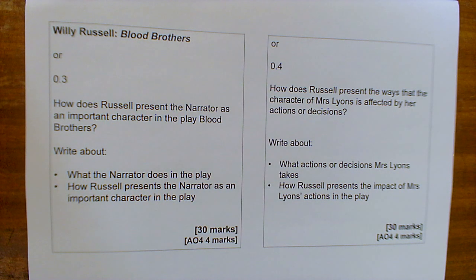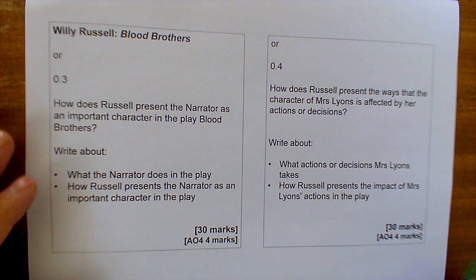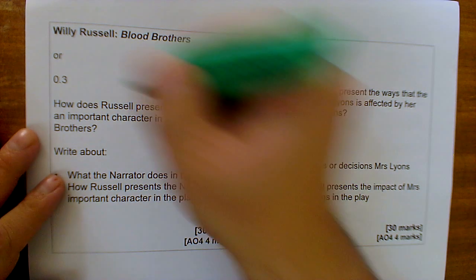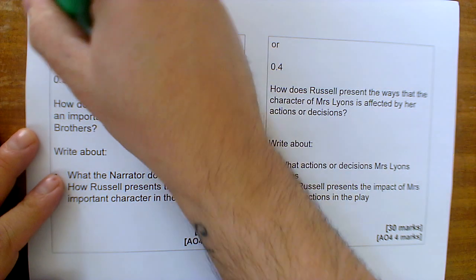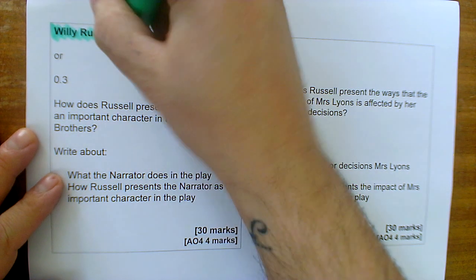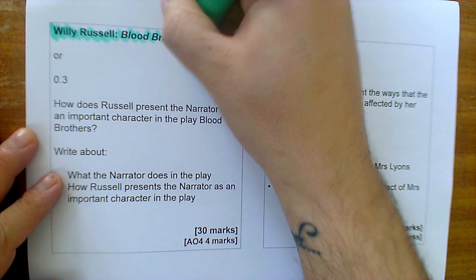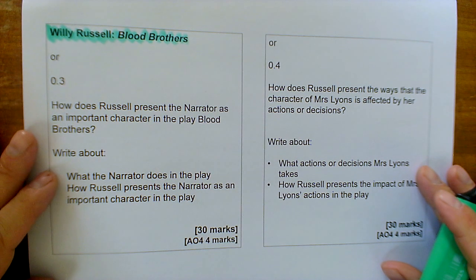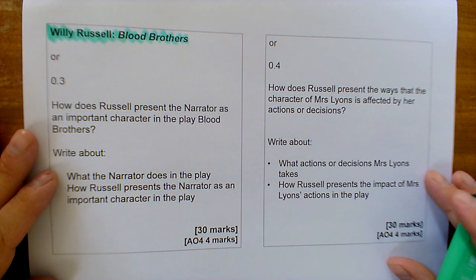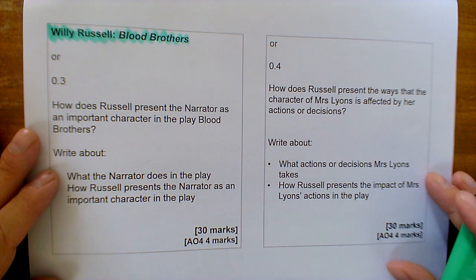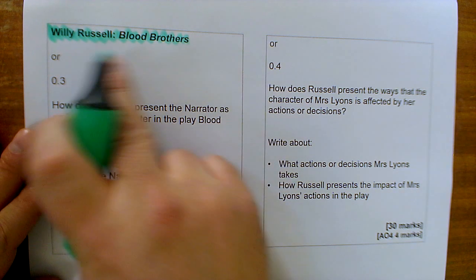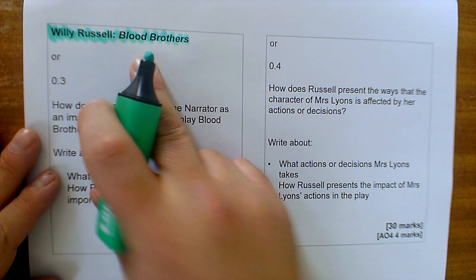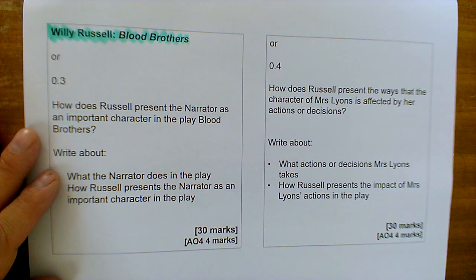In this Walk & Talk Mock video I'm going to be exploring two example questions for Literature Paper 2, Section A, and just to remind you that the text that you've been studying for the last couple of years is Willy Russell's Blood Brothers.